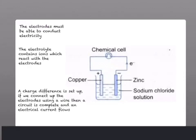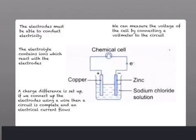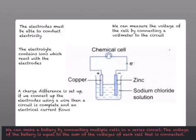If the electrodes are connected by a wire, this means that we have a full circuit. We can then connect up a voltmeter in order to measure the voltage of this cell. If we connect up multiple chemical cells, then we create a battery. A battery will have a higher voltage as we add the voltages of each cell connected in the series circuit.